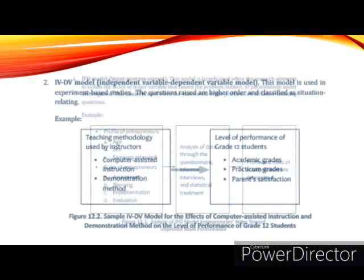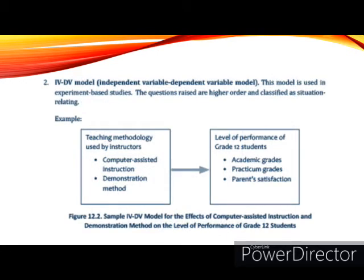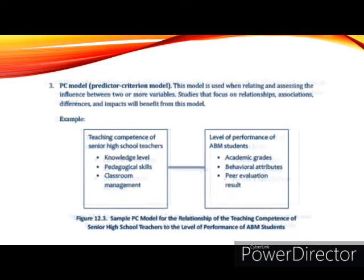The independent and dependent variable model is used in experiment-based studies. The questions raised are higher order and classified as situation-related questions. The predictor criterion model is used when relating and assessing the influence between two or more variables. Studies that focus on relationships, associations, differences, and impacts will benefit from this model.